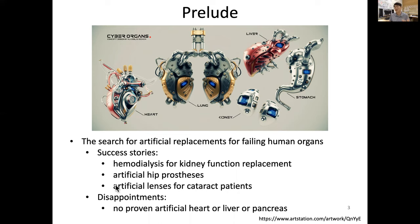These are relatively simple aspects of biomaterials. There are no proven artificial heart, artificial liver, or artificial pancreas, which poses a great challenge and at the same time an opportunity for biomedical engineers to develop more sophisticated organs that can benefit many people who have problems in their organ function.